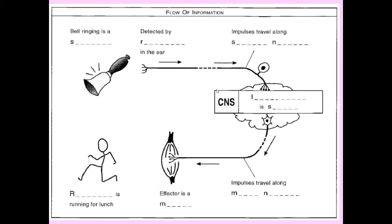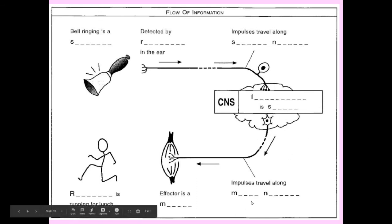Here is a summary diagram — see if you can pause for a second and work out what would go in each of the blanks. The bell ringing would be a stimulus, detected by the receptors of the ear — you might also see the bell ringing, so the receptors in the eyes too. The information will travel along as impulses in the sensory neurons. Information is then processed, impulses travel along the motor neuron, the effector is a muscle, and the response is running for lunch.